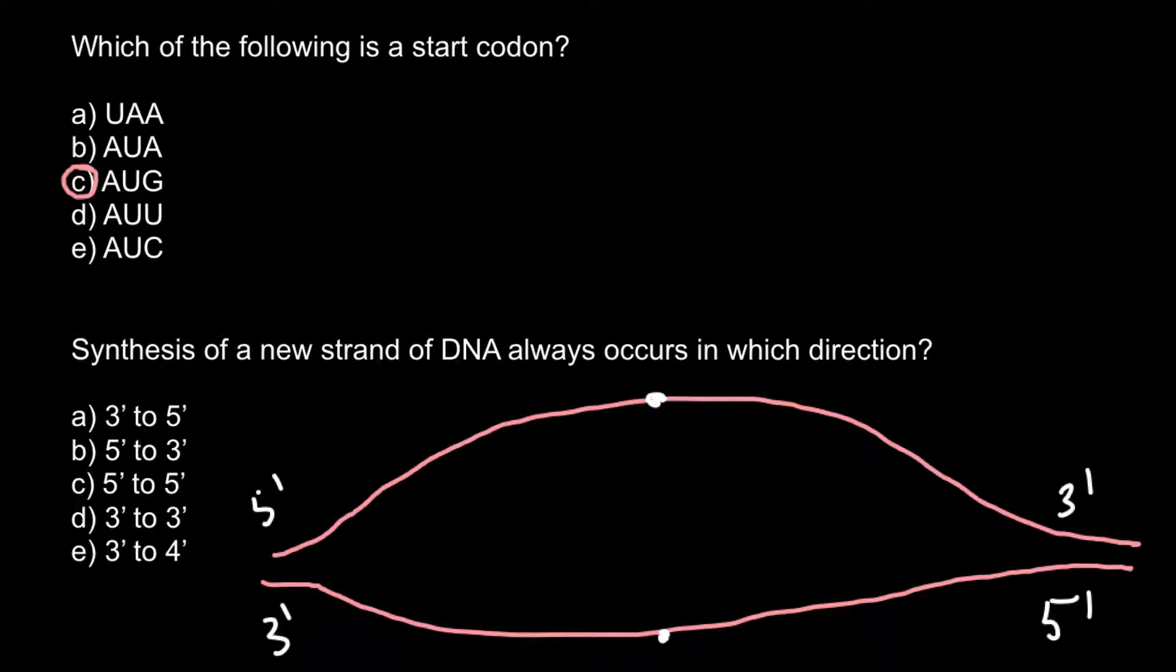And replication would start with addition of RNA primers. So imagine that somewhere here we would have RNA primer on this strand and somewhere here on this strand of the new DNA that would be synthesized. So if we have three prime end here in this primer we would have five prime end here and three prime end here.